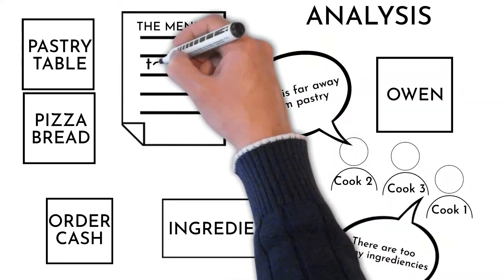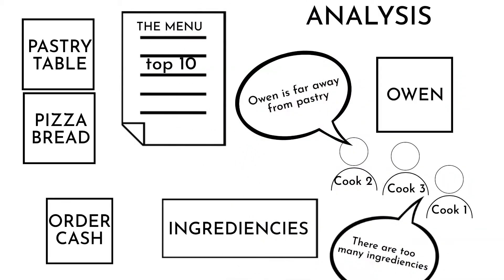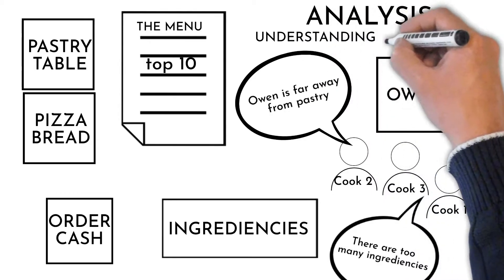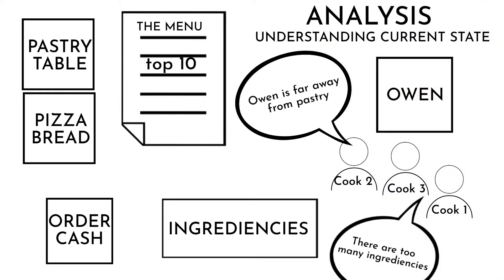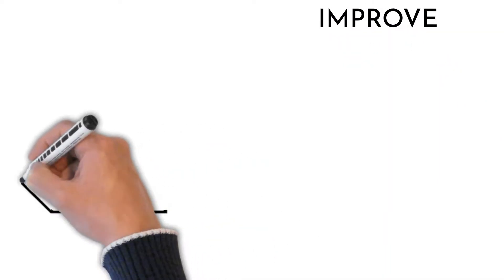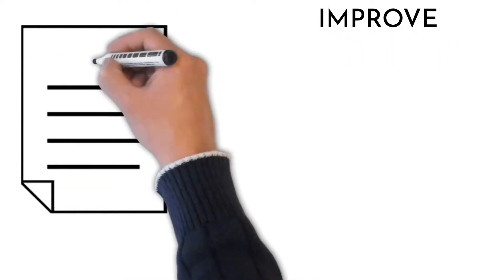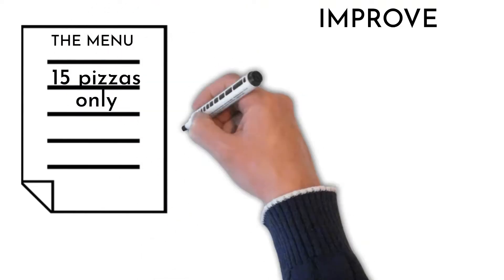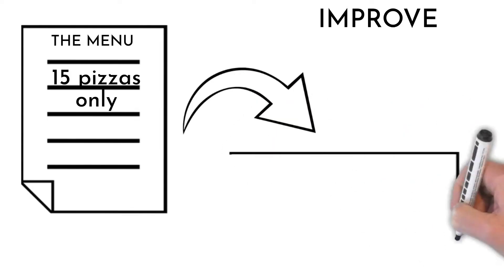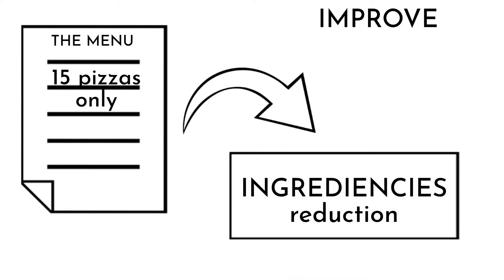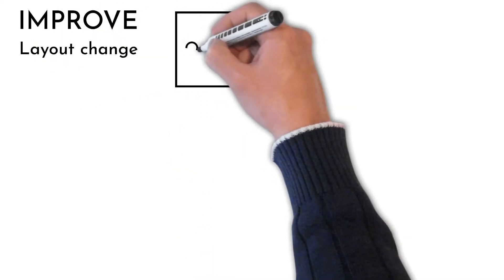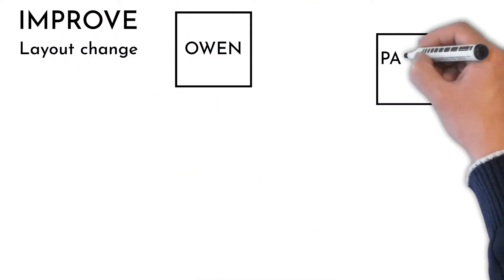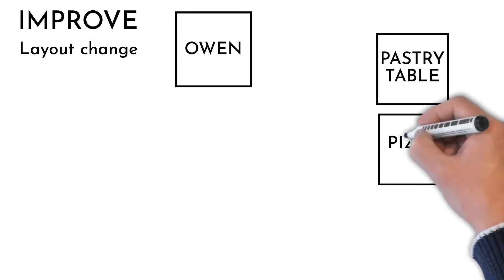By addressing all these wastes, the team aimed to improve the process, decrease cycle time, and reduce variation to better meet customer needs. The first change was reducing the offered pizza list from 40 to 15 types — 12 meat pizzas and 3 vegetable-only. This allowed them to cut ingredients by half, which also reduced the space requirement.